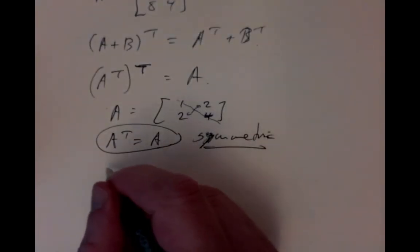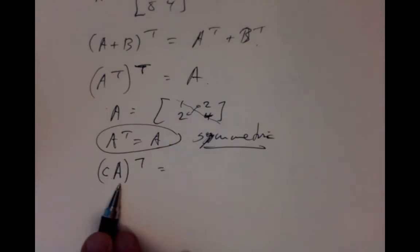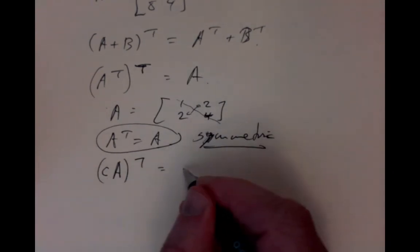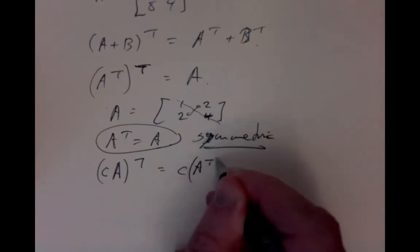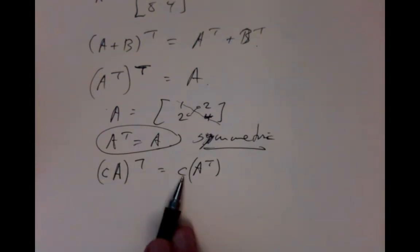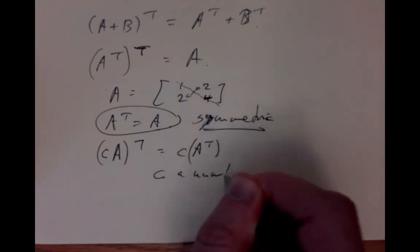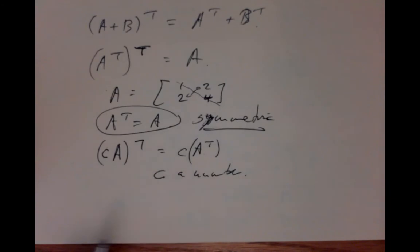We can see that, for example, if we scale and then transpose, so we multiply a matrix by a number C and then transpose. What have we done? We multiply all the entries by C. Then we swap the rows and the columns, but they're still all multiplied by C. So that's the same as multiplying the transpose. So we multiply and then transpose or you transpose and then multiply by a constant. For us at the moment, all the numbers are just real numbers. We'll only be working for the moment with real number matrices. We may eventually need some complex number matrices, but for the moment they'll just be real number matrices.